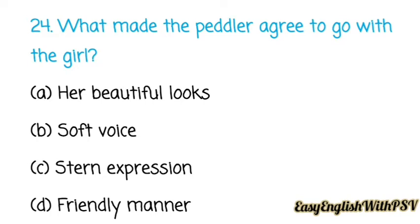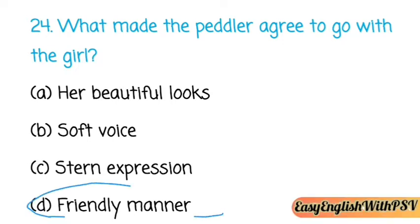Question number twenty-four: What made the peddler agree to go with the girl — her beautiful looks, soft voice, stern expression, or friendly manner? The correct answer is: friendly manner. Her friendly manner made the peddler agree to go with the girl.